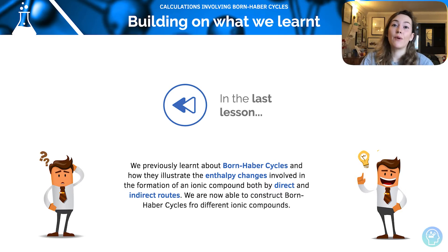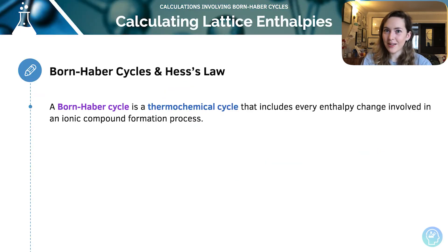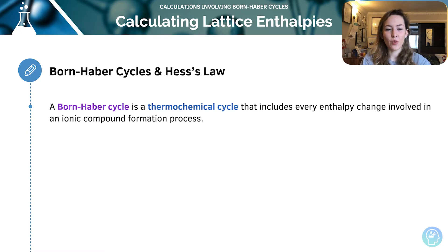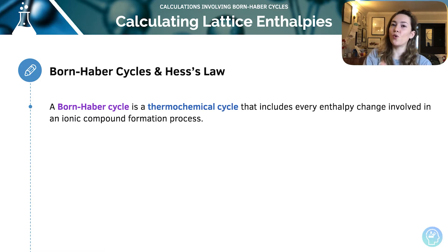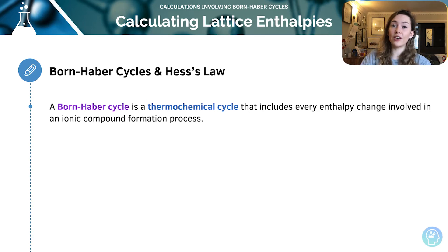Now we're going to have a look at how we can actually use calculations to find an unknown value. As a quick reminder, Born-Haber cycles use Hess's law, so it's a thermodynamic cycle and we have every single enthalpy change required to make an ionic compound. Lattice enthalpies can't be directly measured, so like you saw with Hess cycles before, we can use a Born-Haber cycle to use known values to calculate an unknown value indirectly.